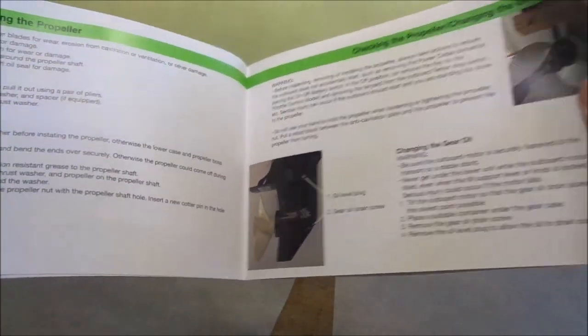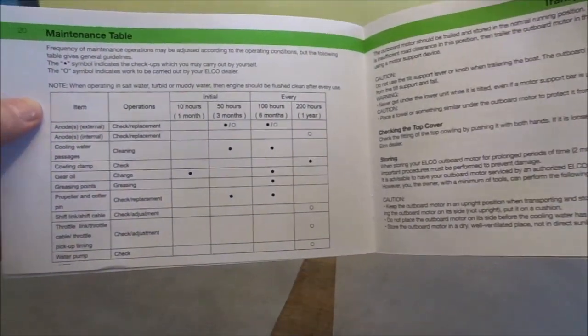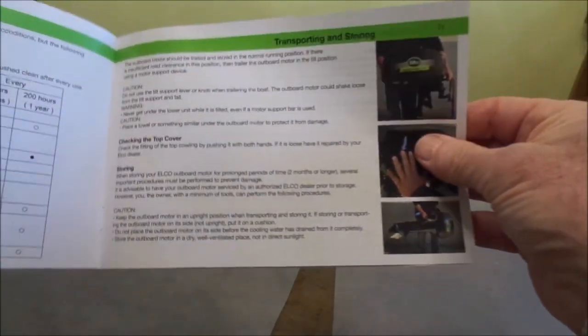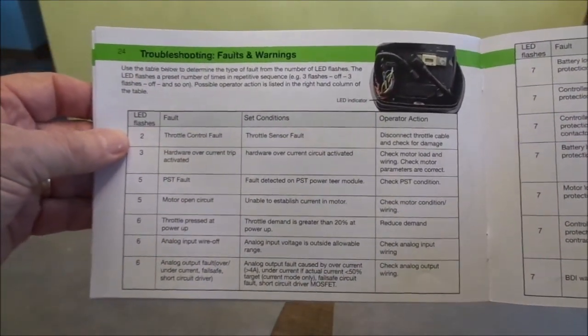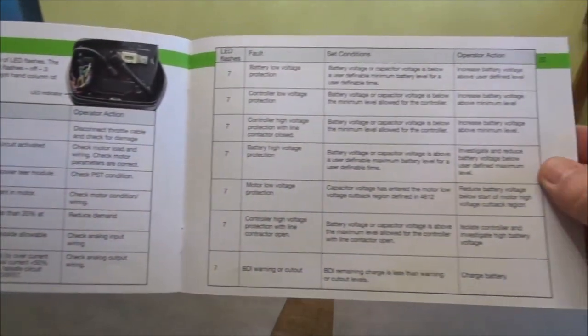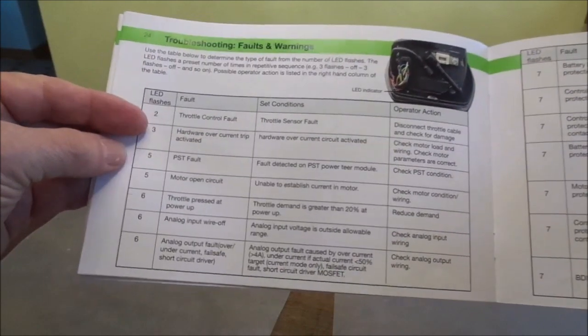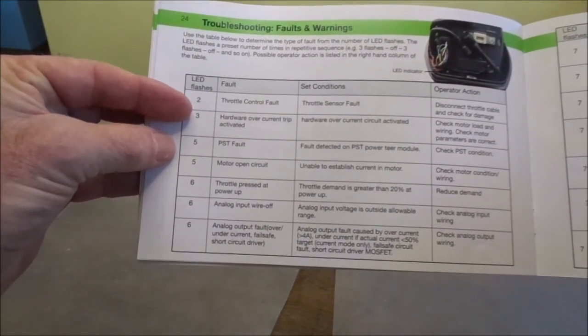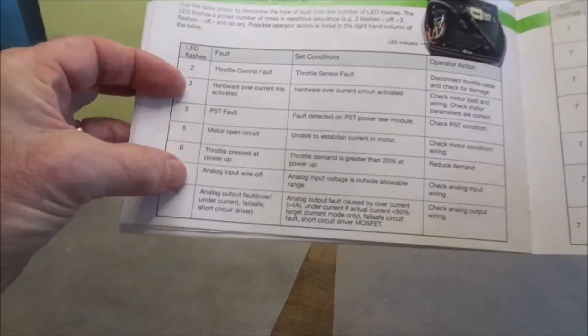Cruising in shallow water recommendations. Removing the propeller, putting a new prop on. Changing the gear oil. And there is a maintenance table. How to transport it and store it. Emergency situations. And troubleshooting faults and warnings. So there is a number of fault settings here. And there is a little LED that will flash on the motor if you are having issues. And you can see that two flashes is throttle control fault, three flashes is hardware over current trip activated, and so on. And it goes through a whole list.